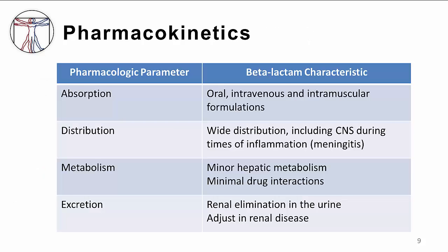It is important to understand some of the pharmacologic properties associated with the beta-lactams. First, some of these drugs are able to be absorbed orally, but not all of them. When they are taken orally, they are best absorbed on an empty stomach, and this leads to some of the GI intolerance associated with the beta-lactams. Some preparations are only available in intravenous or intramuscular form. Beta-lactams distribute well into most tissues. Penetration into the central nervous system during states of inflammation, such as with meningitis, is moderate.